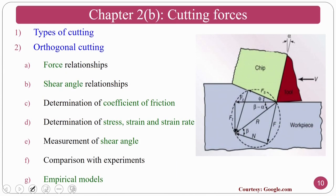Chapter 2B deals with cutting forces. There are two types of cutting: orthogonal cutting and oblique cutting. Mostly we deal with orthogonal cutting in this introductory course. In orthogonal cutting we also see force relationships, shear angle relationships, and the determination of the coefficient of friction — which is one of the most important things because it tells us the frictional losses and useful energy. We also determine stress, strain, and strain rates, measurement of shear angles, comparison with experiments, and some empirical models.